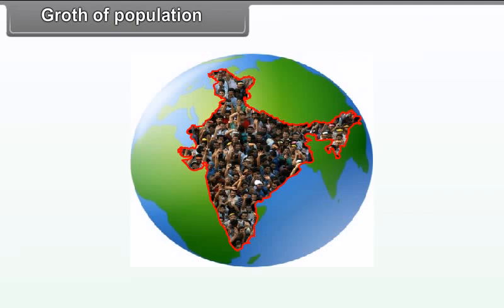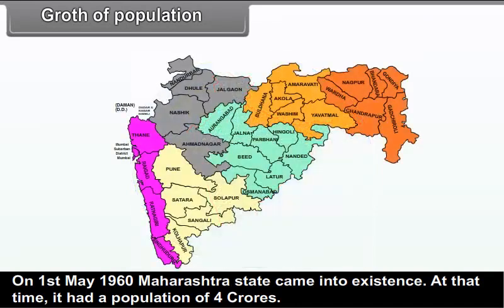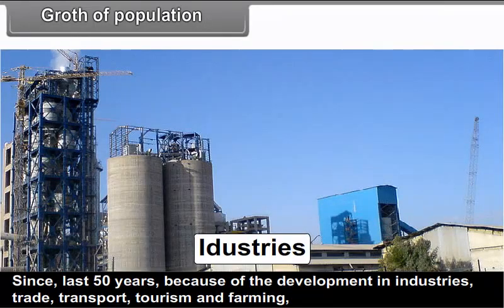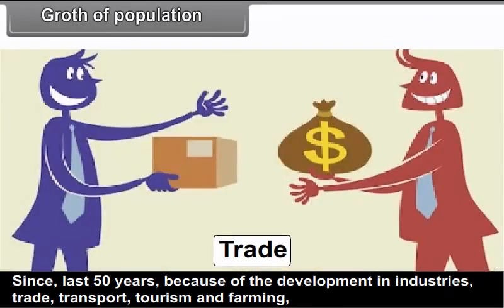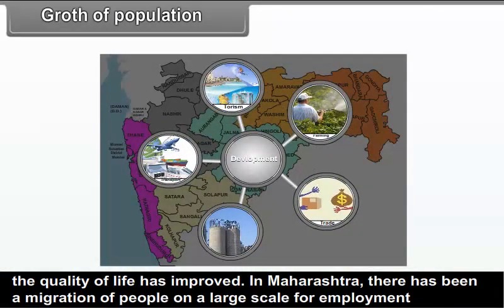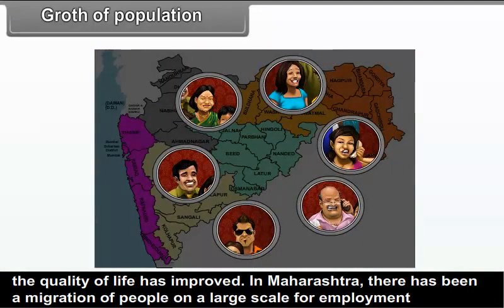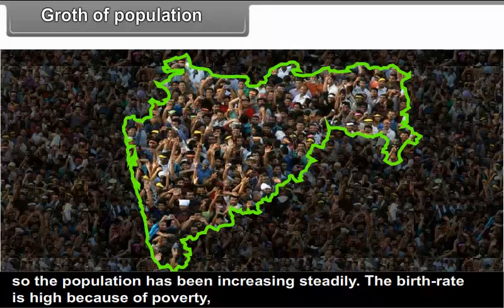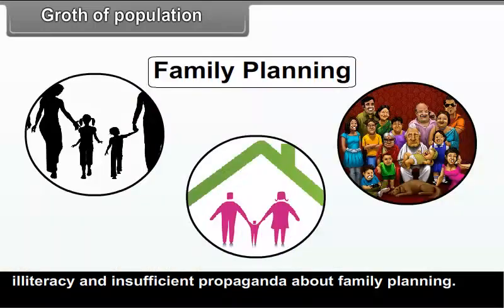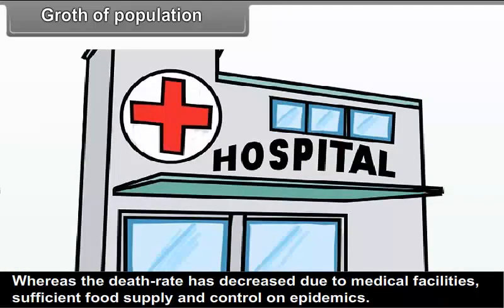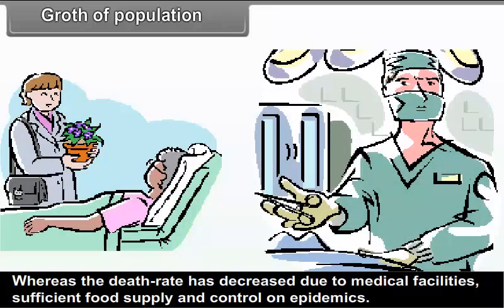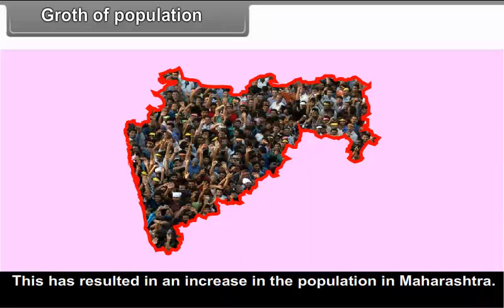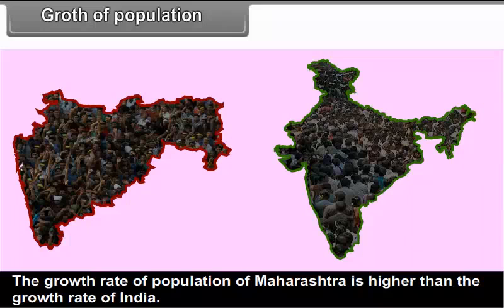7.1 Growth of Population. On 1st May 1960, Maharashtra state came into existence with a population of 4 crores. Over the last 50 years, due to development in industries, trade, transport, tourism, and farming, the quality of life has improved, and there has been large-scale migration for employment. The birth rate is high due to poverty, illiteracy, and insufficient family planning, while the death rate has decreased due to medical facilities, sufficient food supply, and control on epidemics.